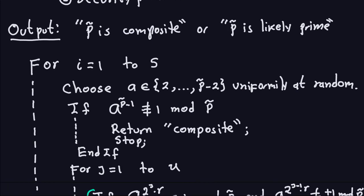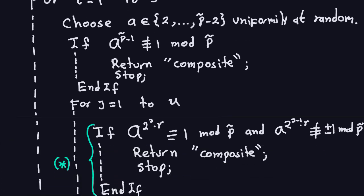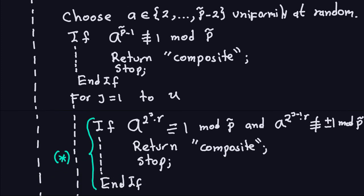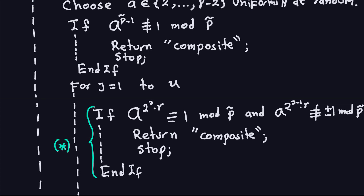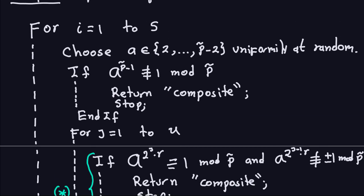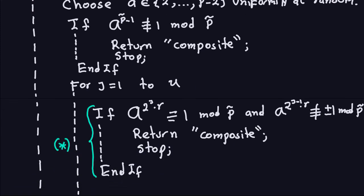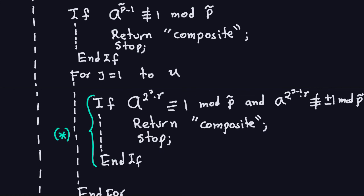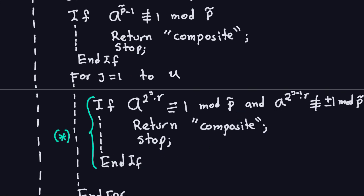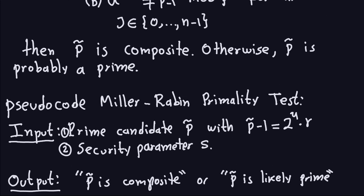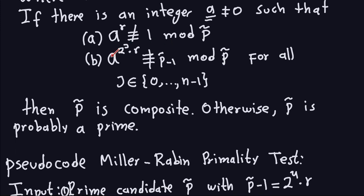Once you determine that a number is composite, you return 'composite' immediately and stop the algorithm — there's nothing else to do. The second for-loop runs through all the powers of 2 in the factorization of P-hat minus 1.